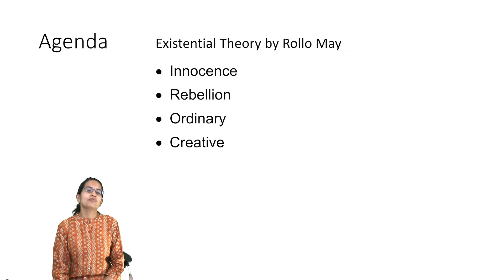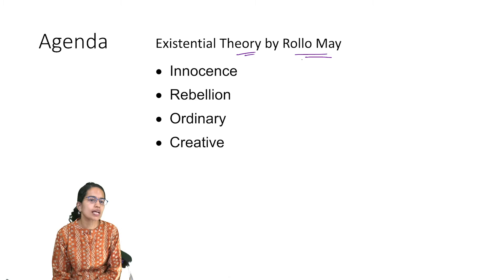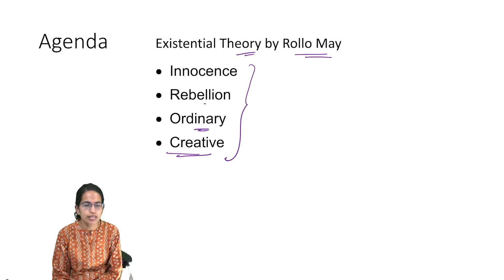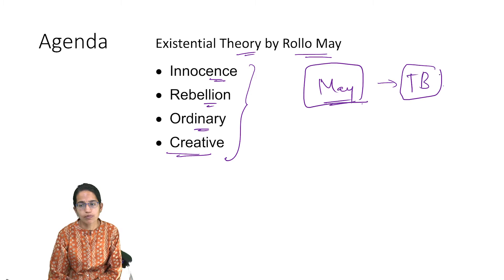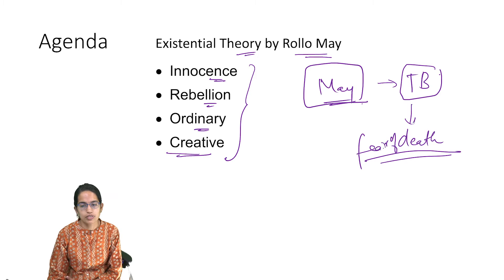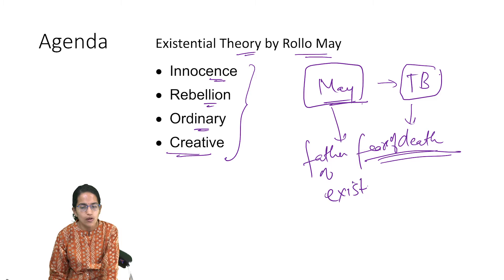In this lecture we will understand existential theory, propounded by Rollo May. May based his theory on four concepts: being, creativity, ordinance, rebellion, and innocence. May's life itself is interesting — he was diagnosed with tuberculosis, and that fear of death led to the concept of existential psychology. May is called the father of existential psychology and was the first PhD to graduate from Columbia University.